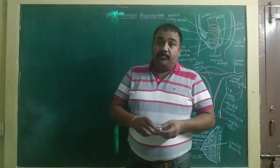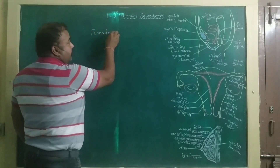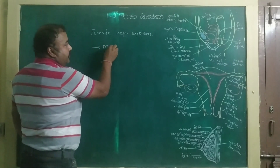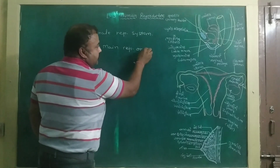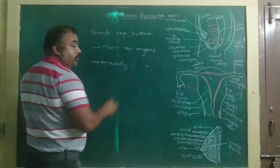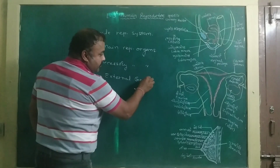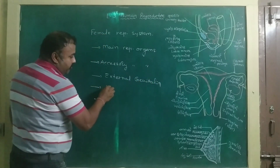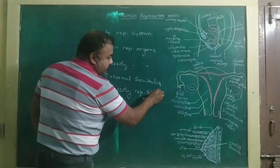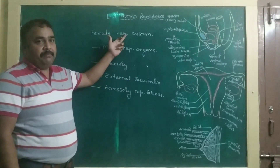Today we are going to learn about the female reproductive system in humans. The female reproductive system is made up of main reproductive organs, accessory reproductive organs, external genitalia, and accessory reproductive glands. These are the four structures associated with the formation of the female reproductive system in humans.